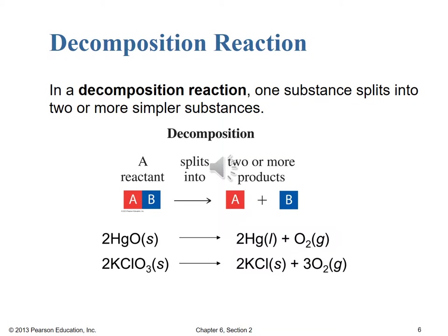Next up, we have the decomposition reaction type. This is the reverse of a combination: in a decomposition, we have one substance — one reactant — splitting up into two or more simple substances on the product side. It's always going to be a compound on the left-hand side, and it can split up into elements, simpler compounds, or some mixture of elements and compounds on the product side. The giveaway: we should only see one species on the reactant side and at least two species on the product side.